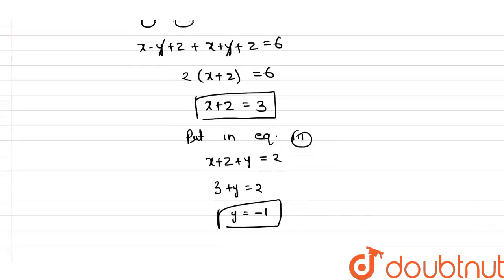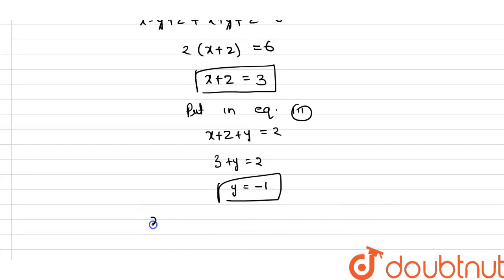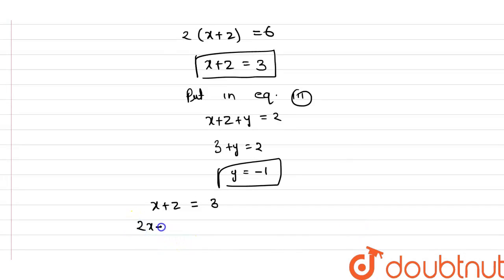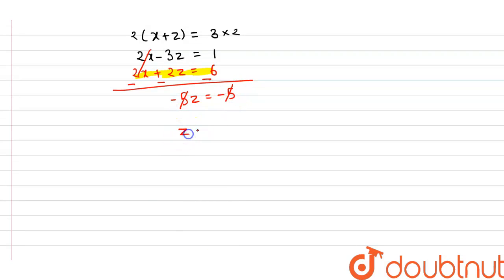Substituting y equals minus 1 into equation 1 gives x plus z equals 3. Substituting y equals minus 1 into equation 2 gives 2x minus 3z equals 1. Multiplying x plus z equals 3 by 2 gives 2x plus 2z equals 6. Subtracting: (2x plus 2z) minus (2x minus 3z) equals 6 minus 1, so minus 5z equals minus 5, giving z equals 1.